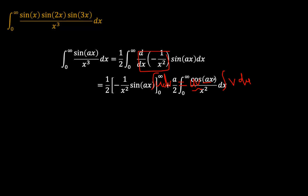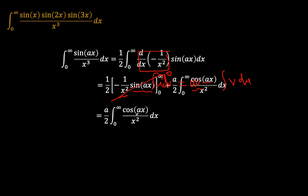v is a half of negative 1 over x squared, and du is the derivative of sin(ax), which is a·cos(ax). That negative was negated with the other negative, so we have a positive. At the upper limit when x tends to infinity, the boundary terms tend to 0. When x equals 0, this part also tends to 0, so the entire boundary expression goes to 0. We are left with just (a/2) times the integral from 0 to infinity of cos(ax) over x squared.